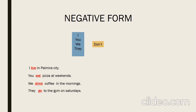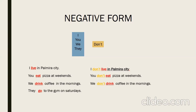These sentences are affirmative. If we put them in the negative form: I don't live in Palmira City. 'Don't' is the negative form — it means 'no'. You don't eat pizza at weekends. We don't drink coffee in the morning. They don't go to the gym on Saturdays.